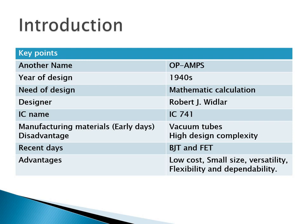The op amp is basically an excellent high-gain differential amplifier. To summarize: operational amplifier is also called op amp; year of design is the 1940s; it was needed for mathematical calculations — addition, subtraction, division, multiplication, integration, differentiation, etc. The designer is Robert J. Widlar, and the IC name is IC 741. Early manufacturing used vacuum tubes; in recent times, designers use BJT and FET.